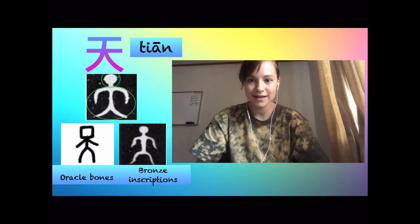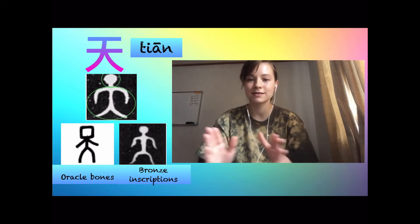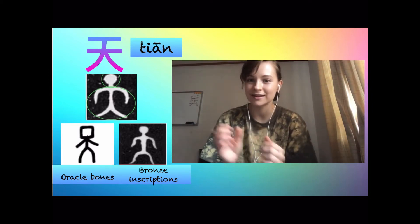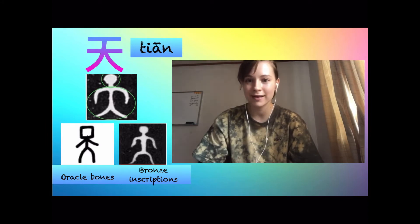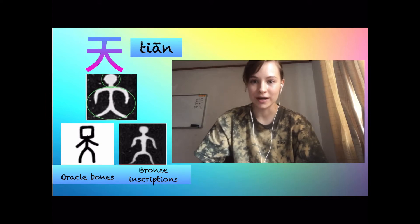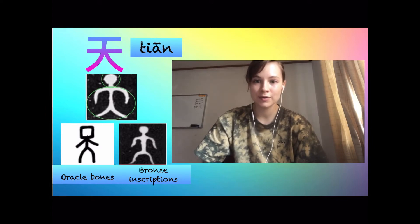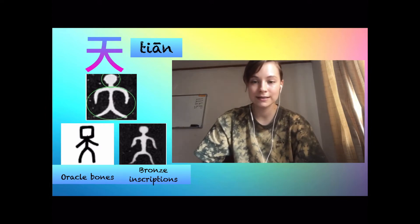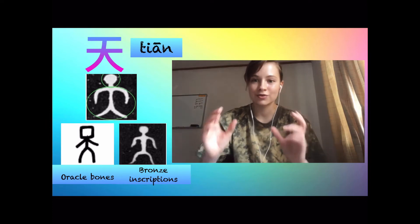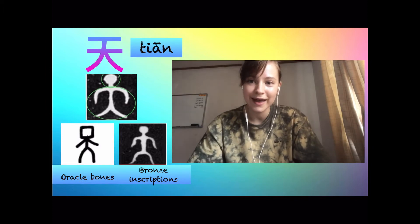Let's take a look at the structure of this character. It is comprised of two elements. The first one is 大 (ta/da), which means 'big,' and the second one is this very interesting circle or square — it actually depends on the period of time. When it comes to 甲骨文 (jiaguwen), the oracle bone inscriptions, it used to be a square, but when it comes to inscriptions on bronze objects, it used to be a circle.